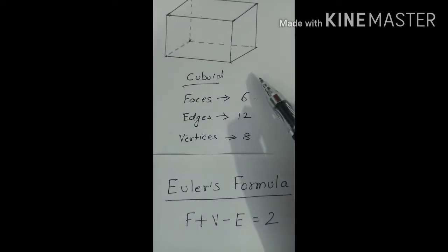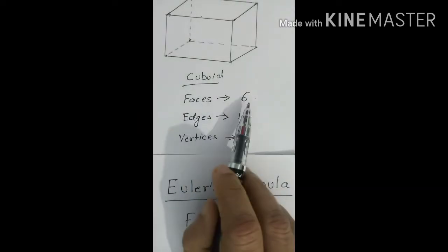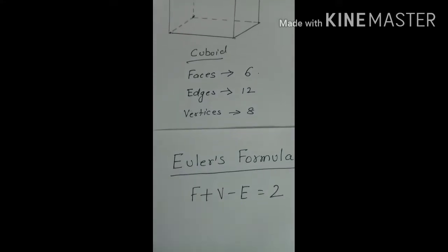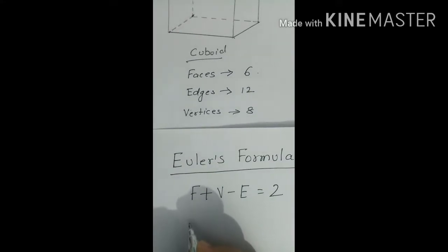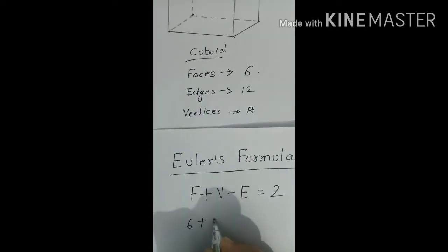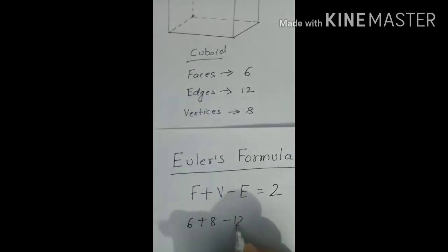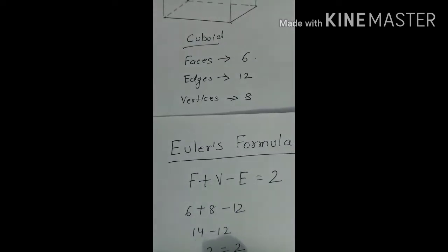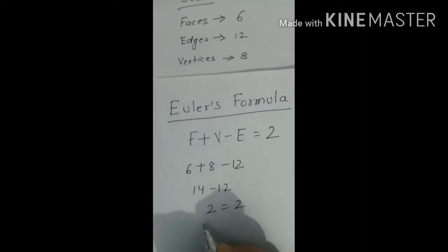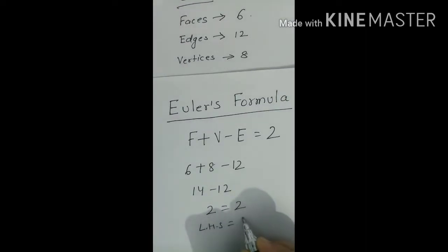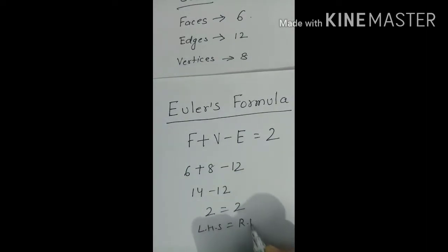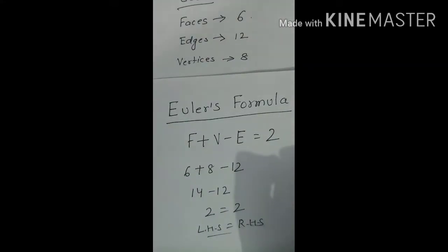Let's check this in case of cuboid. If I have 6 faces, 12 edges, and vertices 8, do they satisfy? Let's check. Faces are 6, vortices are 8, edges are 12. 6 plus 8 gives me 14 minus 12, it gives me 2 and on the right hand side, 2 is there. So, left hand side is equal to right hand side. So, these are the dimensions of a cuboid, so a cuboid satisfy the Euler formula.